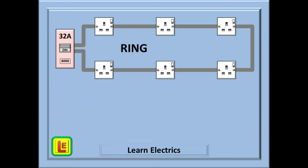Let us begin by reminding ourselves what a ring circuit looks like. A cable leaves the 32 amp breaker along the first leg, it visits all the parts of that circuit and then returns to the breaker along the second leg. It goes out and it comes back.